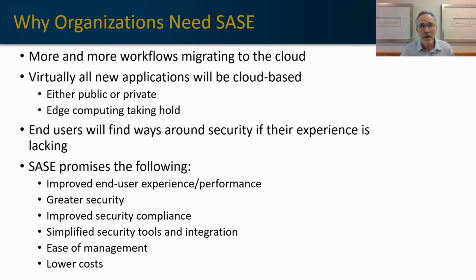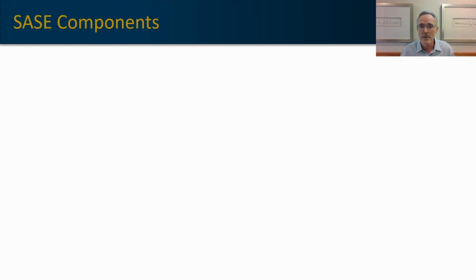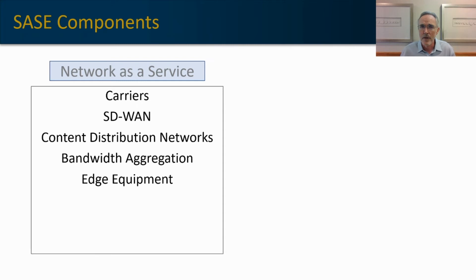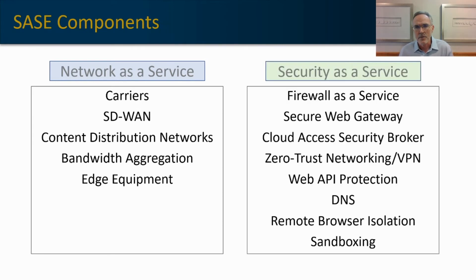SASE right now is a framework — the assembly of different point solutions into a SASE strategy. Those solutions include the following: on the network-as-a-service side, it's a carrier strategy, an SD-WAN strategy, a content distribution service, bandwidth aggregation — so the concept of primary/backup for bandwidth goes away and it's about using all the bandwidth you have all the time — and an edge equipment strategy consolidating your edge appliances. On the security-as-a-service side, SASE includes firewall as a service, secure web gateway, cloud access security broker, a zero trust element, a web API protection or web application firewall, DNS, remote browser isolation, and sandboxing. That's the category as defined by Gartner two years ago.